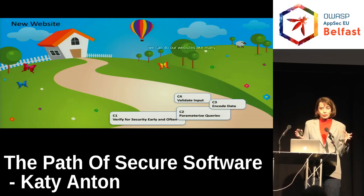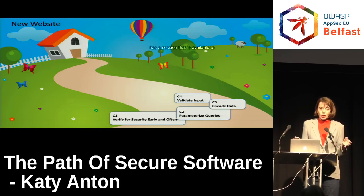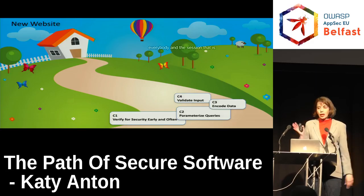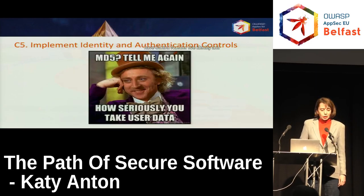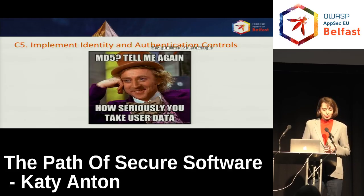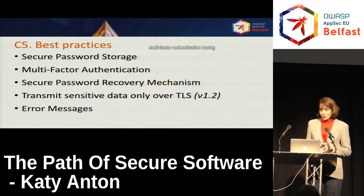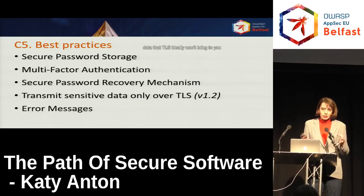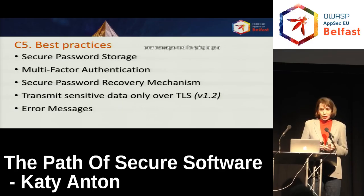Our website has a section available to everybody and a section restricted to certain users. For this we have control number five: identity and authentication controls. When it comes to authentication, this can be a complex security control. Some best practices include: implementing secure password storage, using multi-factor authentication, having a secure password recovery mechanism in place, and transmitting sensitive data via TLS — ideally 1.2. It's also important to have well-designed error messages in place.